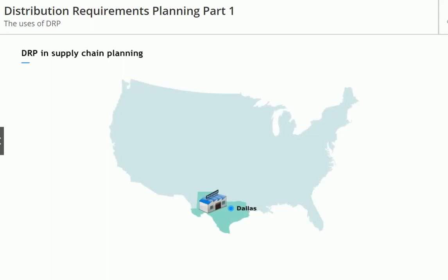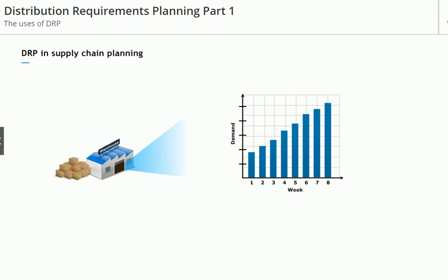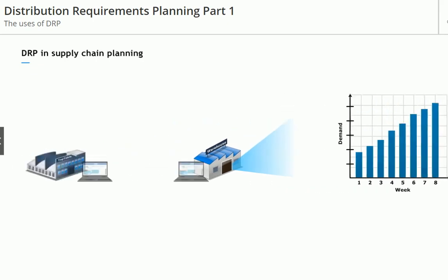Let's say the Dallas warehouse forecasts a large increase in demand in the weeks ahead. Its inventory is enough to handle the next few weeks' orders, but will need to replenish its inventory in the next month and a half. DRP allows Dallas to communicate when it expects to need more from our factory well in advance.